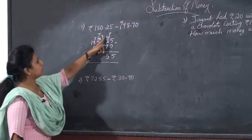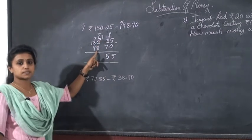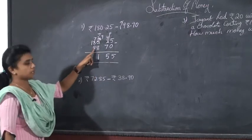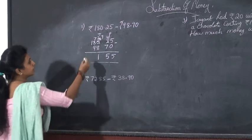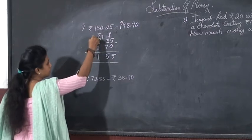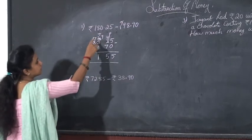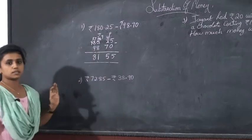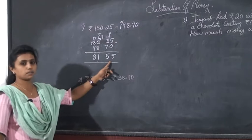Then, 9 minus 8. 9 minus 8. It is 1. Put 1 here. 7 minus 9. So, you need to take borrowing. It is 8. Clear? So, 81 rupees 55 paise.